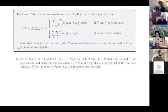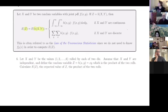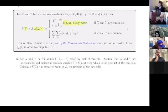Next, we use the Law of the Unconscious Statistician to calculate the expected value of a function of more than one variable. For a function g(X, Y) of joint random variables, the expected value is the double integral (or double sum for discrete) of g(x, y) times the joint probability distribution, over the ranges of X and Y.